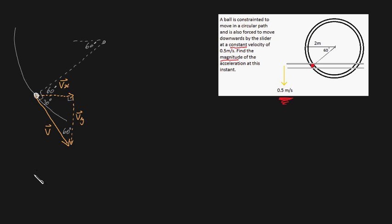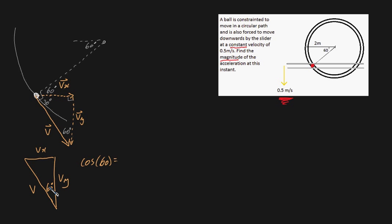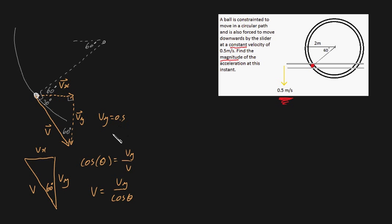Using this information, we can redraw the magnitudes of our velocities. We have v, vx, vy, and of course this angle is 60 degrees. We know that cosine of 60 is equal to adjacent over hypotenuse, which is vy over v. I'm going to generalize using theta instead of 60 and plug theta = 60 at the very end. Likewise, vy is 0.5, but I'll plug that in at the end too. So v equals vy divided by cosine theta.